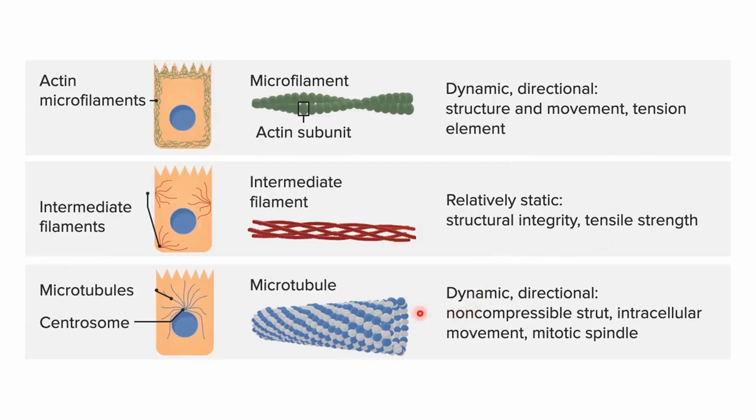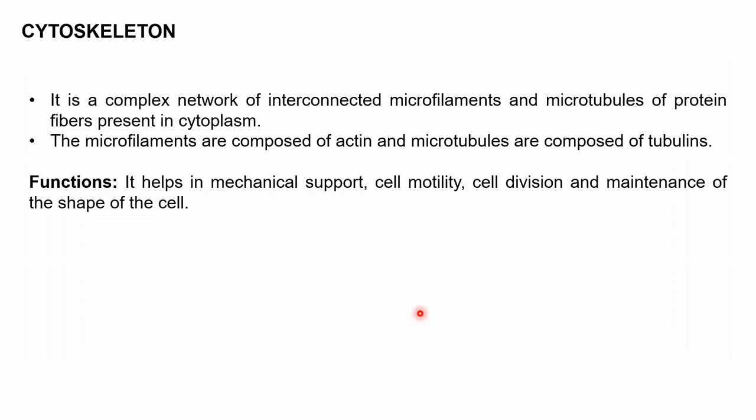Microtubules, made of tubulin protein, are also dynamic and directional with polarity. They are non-compressible structures and help in the formation of the mitotic spindle during cell division. The main functions of the cytoskeleton are to provide mechanical support, cell motility, aid in cell division, and maintain cell shape.